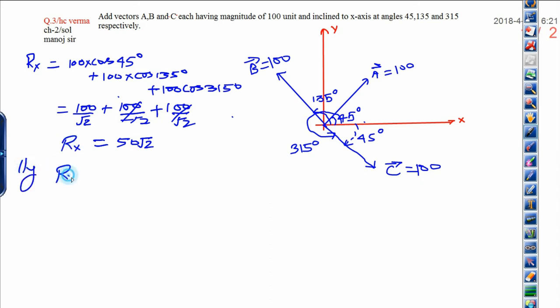Similarly, you can find the value of Ry. That is Ry equals 100 sin 45 degrees plus 100 sin 135 degrees plus 100 sin 315 degrees.